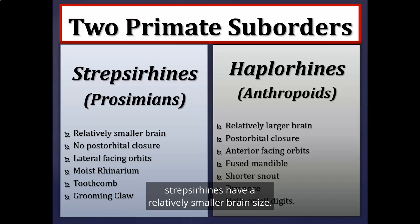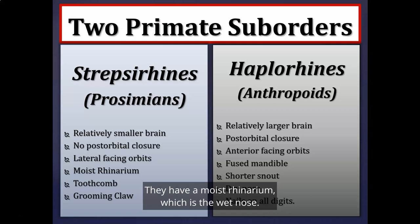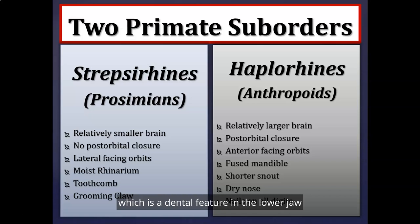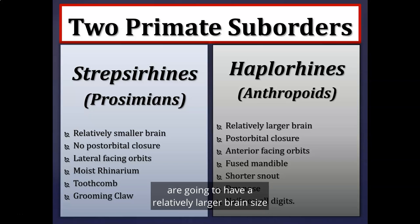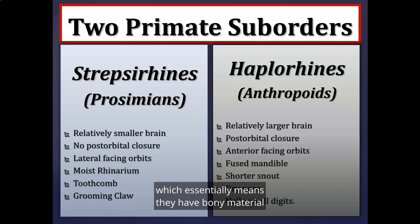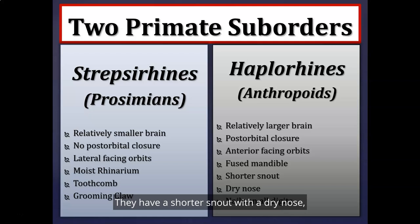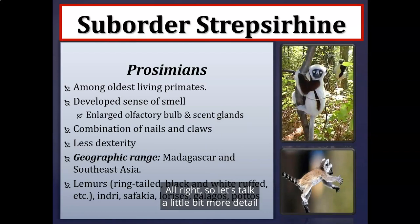Compared with haplorhines, strepsirhines have a relatively smaller brain size, no postorbital closure, slightly lateral-facing orbits, a moist rhinarium (wet nose), a tooth comb in the lower jaw as a grooming adaptation, and a grooming claw. Haplorhines have a relatively larger brain size, postorbital closure with bony material fully protecting the eye sockets, anterior (forward-facing) orbits, a fused mandible, a shorter snout with a dry nose, and nails instead of claws on all digits.